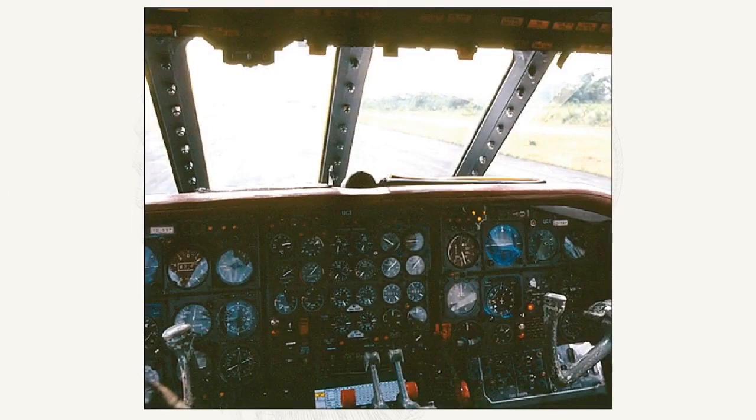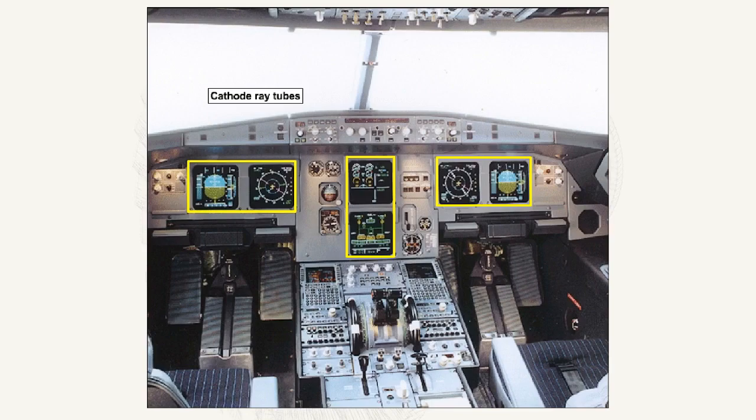In the clockwork cockpit there is a multitude of gauges displaying information. The glass cockpit is displayed on cathode ray tubes CRTs, or liquid crystal display panels LCDs, with light emitting diodes LEDs for digital displays.